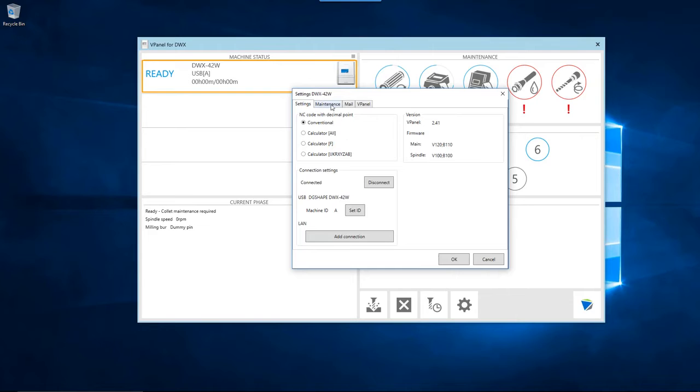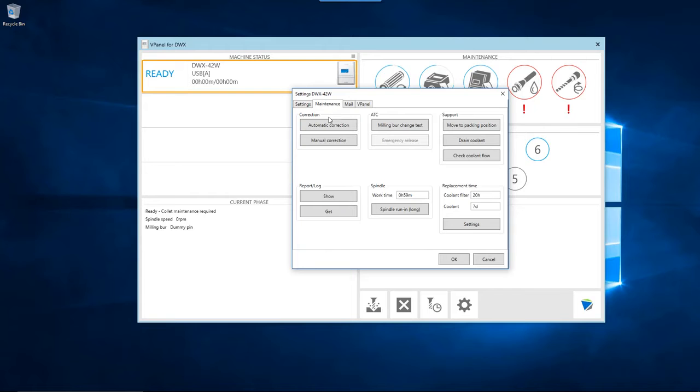Click on the Maintenance tab. Then, click on the Automatic Correction button in the Correction section of the Maintenance tab.